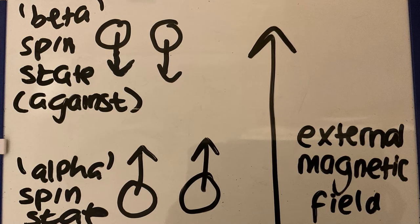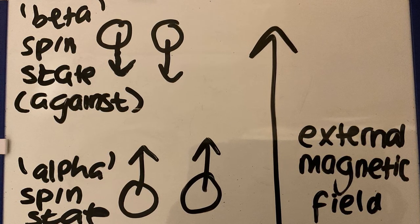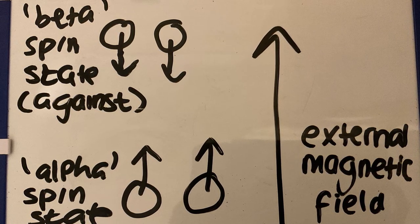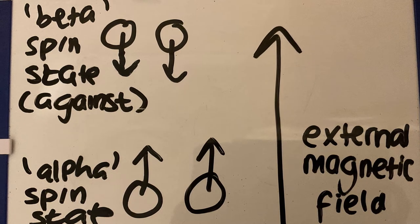A lot of energy is required to switch the nuclei from the alpha spin state to the beta spin state. Particular frequencies of radio waves can cause the nuclei to flip from one spin state to another.